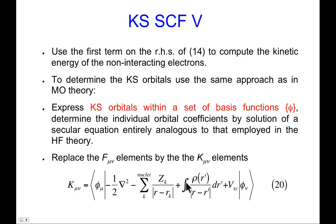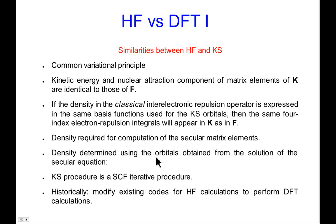We still need a density in order to compute the secular matrix elements. So remember there's a density matrix in Fock matrix elements, and there's going to be a density here in Kohn-Sham matrix elements. The density is determined from the orbitals that are part of the solution of the secular equation, so that's why it's a self-consistent field iterative procedure. Modifying the existing codes to perform DFT calculations was reasonably easy to do.